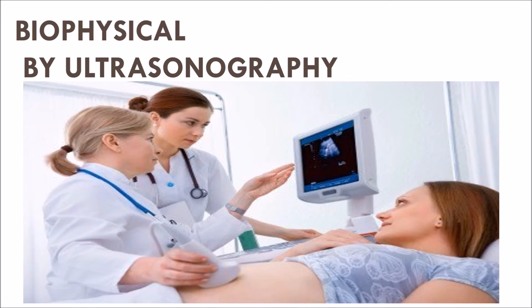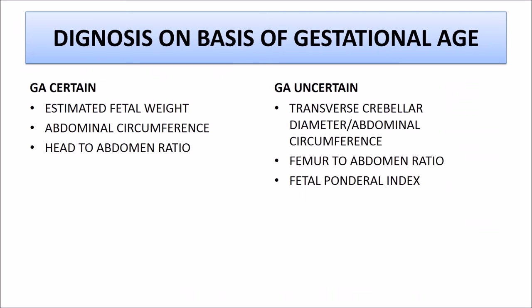The biophysical method uses ultrasonography. Diagnosis is based on gestational age. When gestational age is certain, we use estimated fetal weight, abdominal circumference, and head-to-abdomen ratio. When gestational age is uncertain, we use the transverse cerebral diameter to abdominal circumference ratio, femur-to-abdomen ratio, and fetal ponderal index.